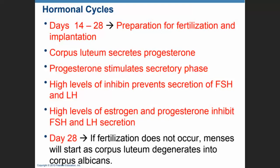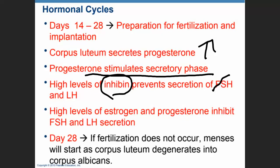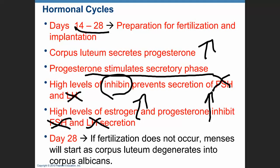Days fourteen to twenty-eight, we are in preparation for fertilization and implantation. The corpus luteum secretes increasingly high levels of progesterone, which stimulates the secretory phase in the uterus. High levels of inhibin are secreted, shutting down FSH and LH to prevent another cycle from starting in case pregnancy happens. High levels of estrogen and progesterone also inhibit FSH and LH secretion. By day twenty-eight, if fertilization doesn't occur, menses will start and the corpus luteum degenerates into a corpus albicans. After days fourteen to twenty-eight, it is the corpus luteum that is secreting estrogen and progesterone.